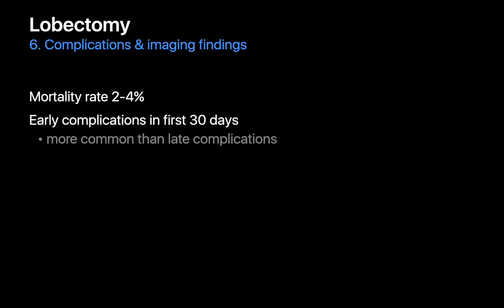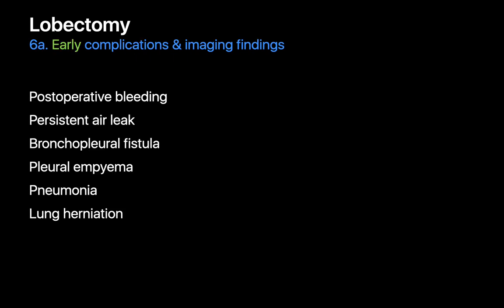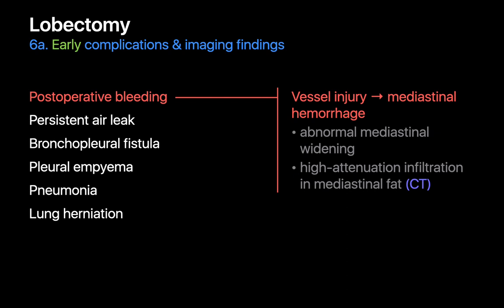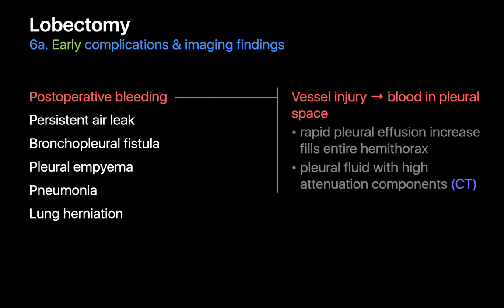Mortality rates post-lobectomy are lower than after pneumonectomy. Complications, if they occur, tend to happen in the first month. We look out for post-op bleeding in the mediastinum — suspected if we see abnormal mediastinal widening on post-op chest x-rays; on CT this may manifest as high-attenuation material or fluid infiltrating the mediastinal fat. We also look for post-op bleeding into the ipsilateral pleural space; if we see a rapid increase in pleural fluid, especially filling the entire hemithorax, we must investigate for hemothorax. On CT, hemothorax may appear as non-uniform attenuation pleural fluid with high-attenuation components corresponding to fresh blood.